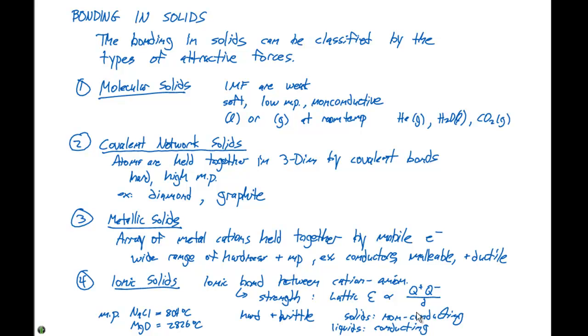So this summarizes all the bonding in solids. We can look at all the properties of solids and classify them into these different groups. And you can justify why we see such a wide variety of properties in solids.